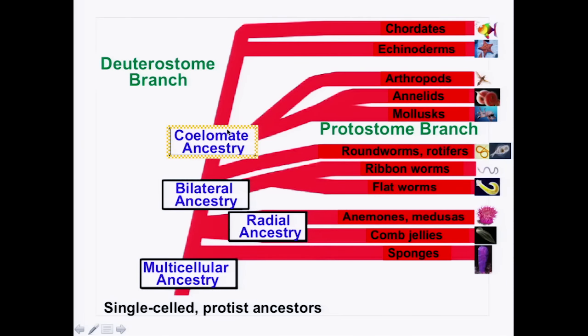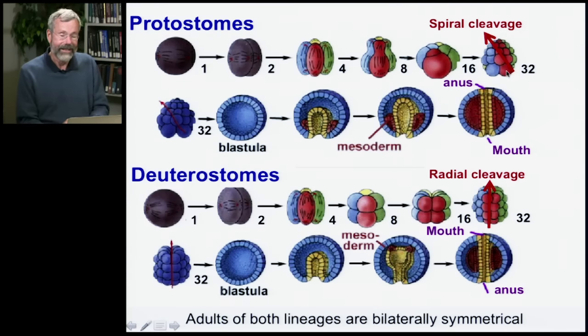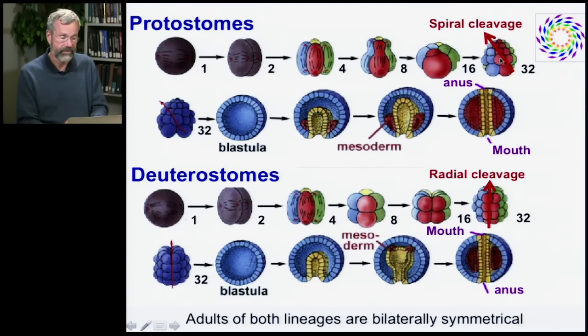From the coelomates, we have two branches: the protostomes, giving rise to mollusks, annelids, and arthropods; and the deuterostomes, giving rise to echinoderms and chordates. The distinction relies solely on details of early development. Both groups start as a single fertilized cell and undergo mitotic division through 2, 4, 8, 16, 32 cell phases. But by the 32-cell stage there's a difference: protostome cells line up in a spiral when viewed from above — spiral cleavage — while deuterostomes have radial cleavage, all lined up in a straight line.